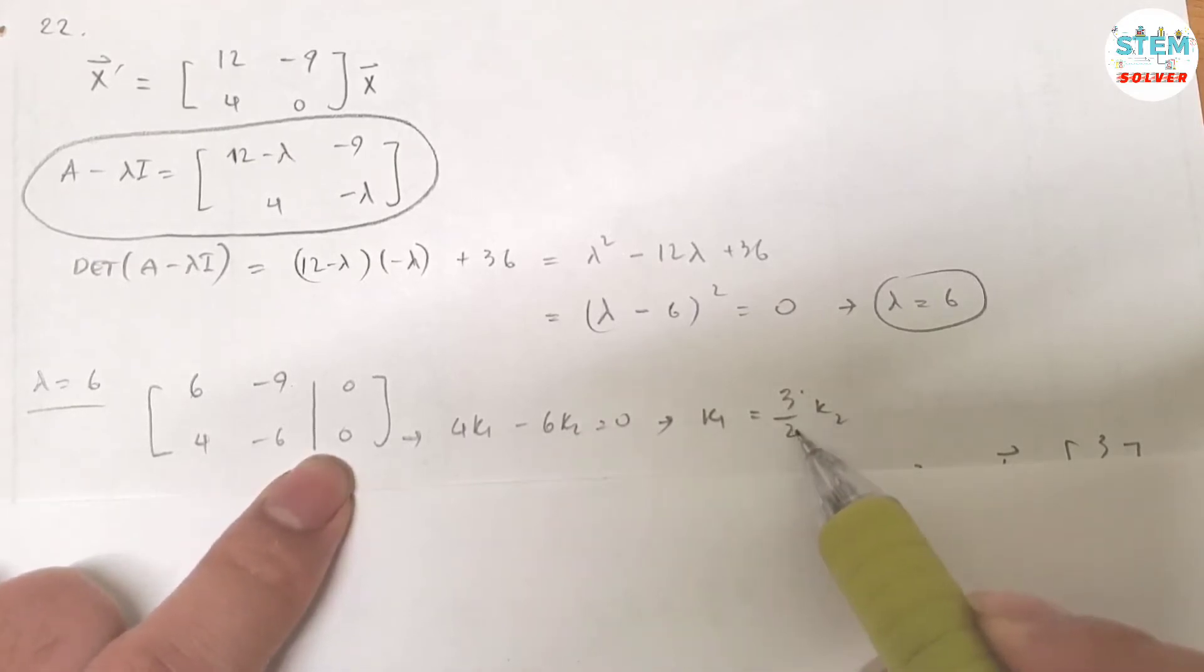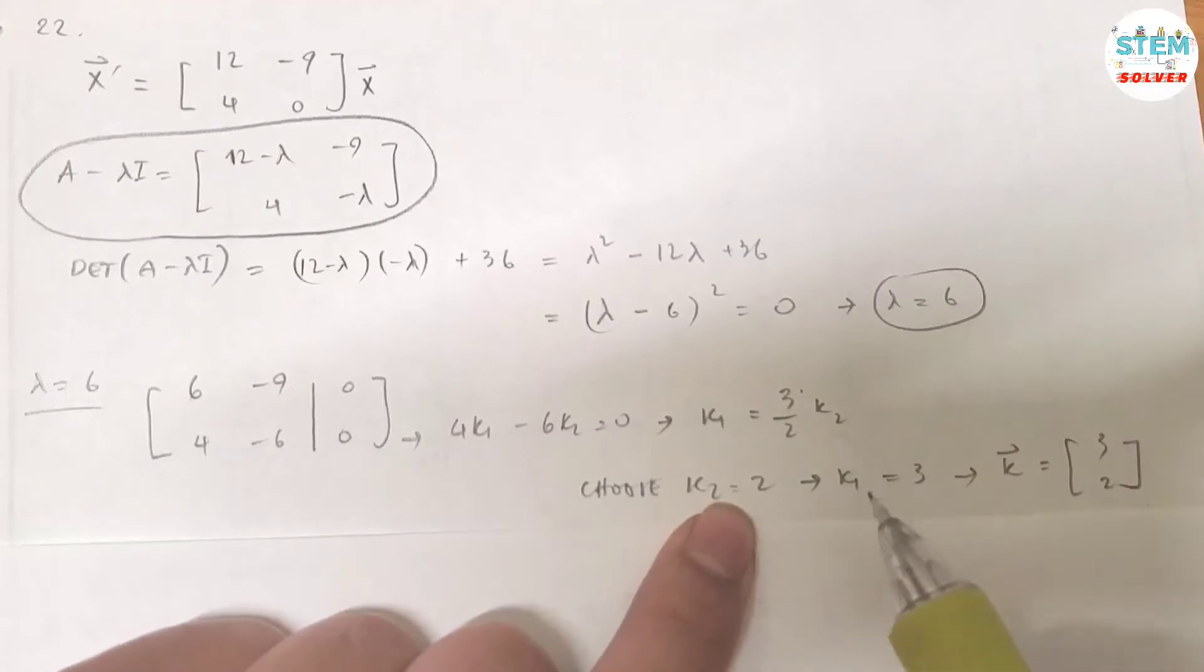Solve for k1, I got 3 over 2 k2. If I choose k2 equals 2, then k1 is 3 and my vector k is 3, 2. You can choose whatever value for k2 as long as it's not 0.